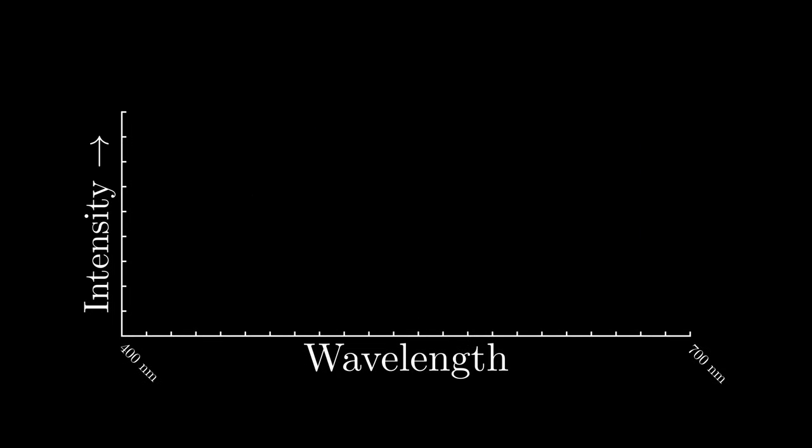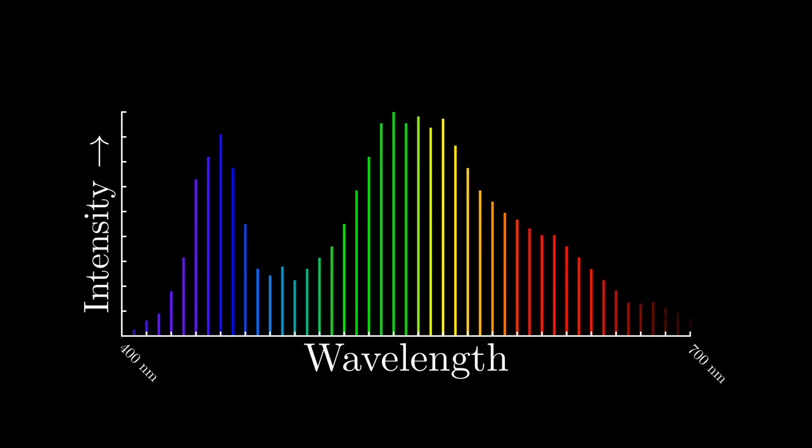Visible light roughly lies between 400 and 700 nanometers, and the colors we see in the natural world are usually made up of a mixture of all these wavelengths. For example, a lotus leaf might emit a complicated light spectrum like this.